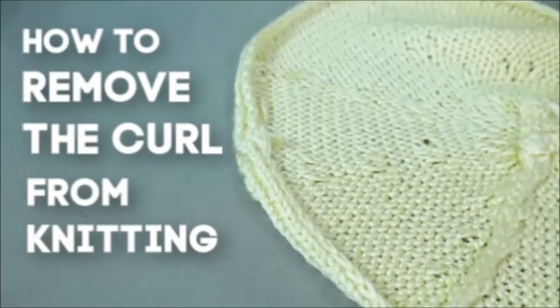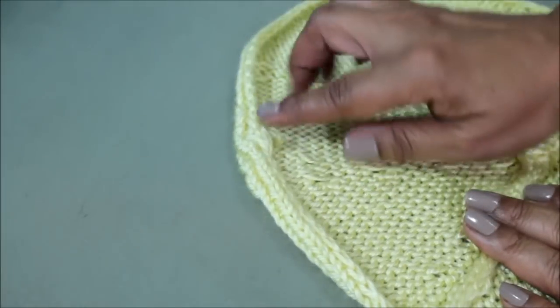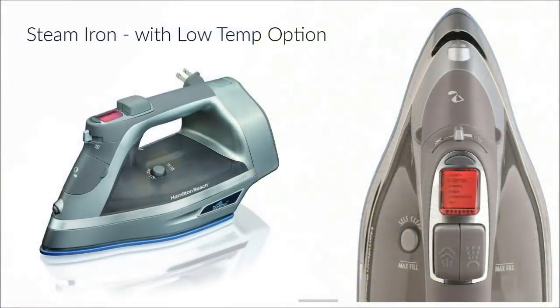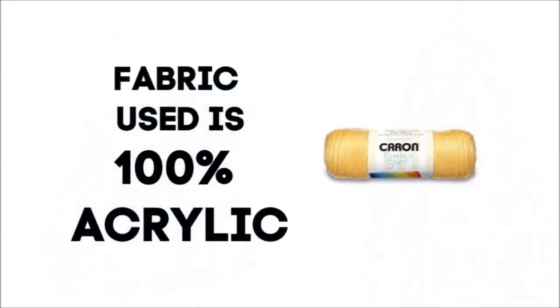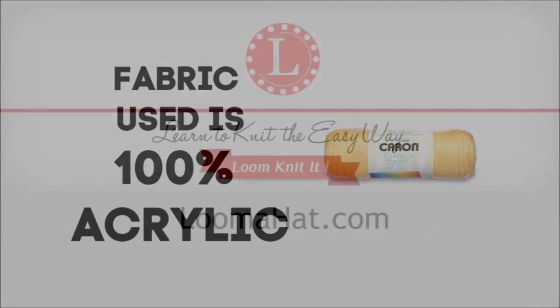The question is how to remove the curl from your knitted fabric. For me, I get rid of this with my steam iron which has a low temperature option, and I do this even when I'm using 100% acrylic yarn.